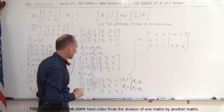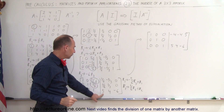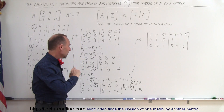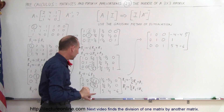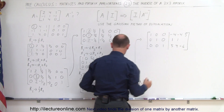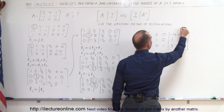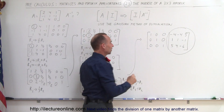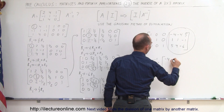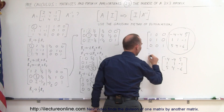One last row to go. One sixth times row 3: one sixth times 1 is one sixth, added to negative one sixth is 0. One sixth times 5 is five sixths, added to one sixth gives six sixths, which is 1. One sixth times 4 is four sixths, added to two sixths is six sixths — that also becomes 1. One sixth times negative 6 is negative 1, added to 0 is negative 1. So A inverse equals: negative 4, negative 4, 5; 1, 1, negative 1; 5, 4, negative 6.